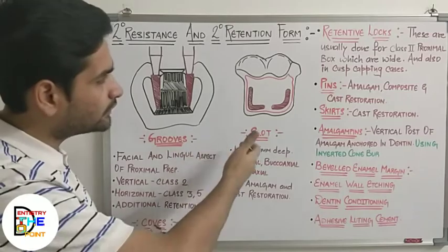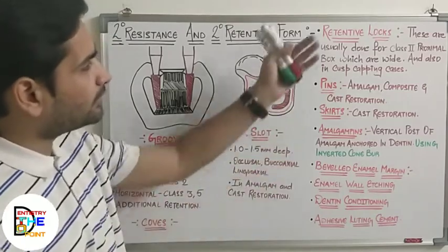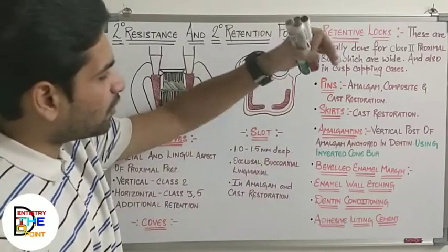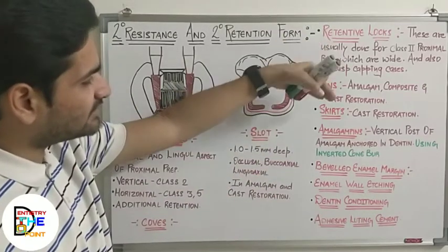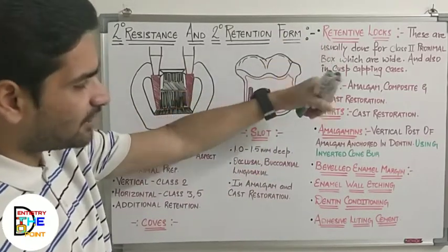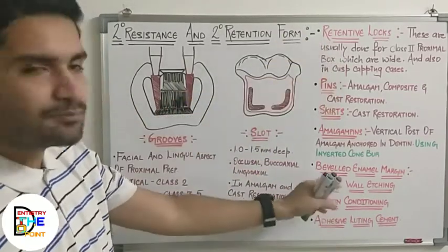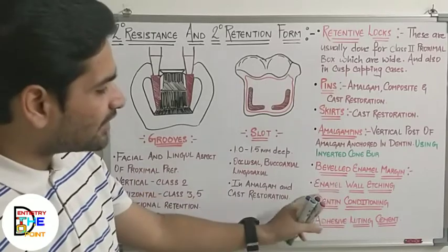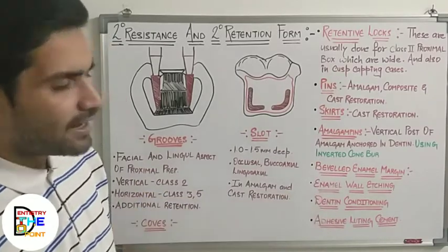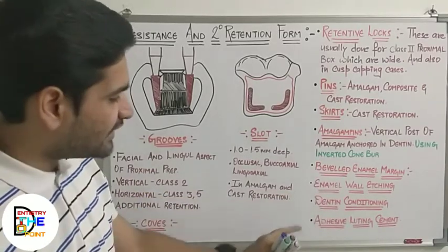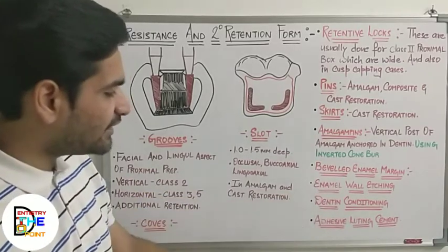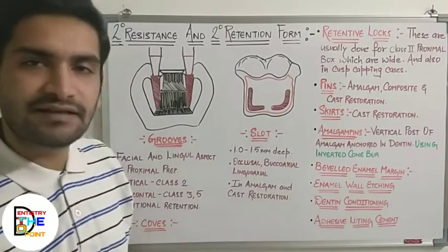The structures you can incorporate include grooves, slots, retentive locks, pins, skirts, amalgam pins, beveled enamel margins, enamel wall etching, conditioning, and adhesive luting.